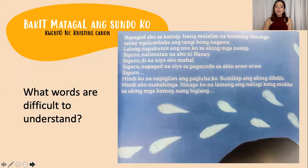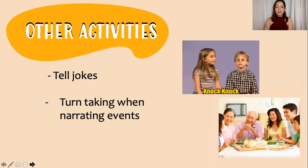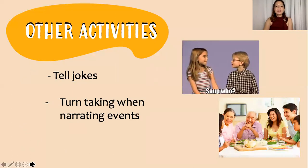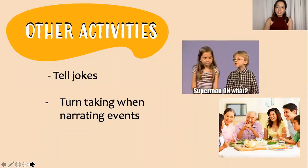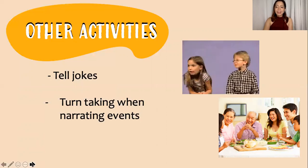So this time, aside from identifying the fluency, what words are difficult to understand? Probably, it could be nalumbaba or buntong hininga. How to discuss meaning? You could ask your child, how do you do buntong hininga? Like this. You can model also, or you could do turn takings. Also, you could ask him or her when he or she does this. When do you do buntong hininga? It could be when you're sad, or when you are disappointed, or when you're frustrated. Other activities, aside from reading, story reading, or story narrating, you could tell jokes, and do turn takings when narrating events during mealtimes. Doing this, you are hitting two birds with one stone. You're not just improving vocabulary, you're also improving expressive language.